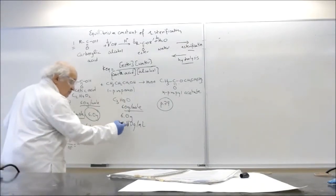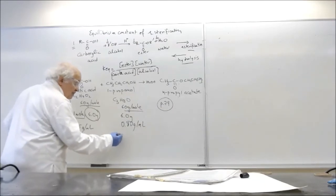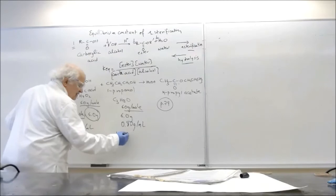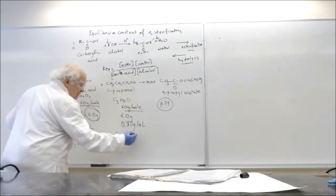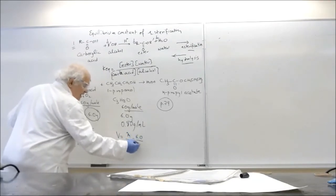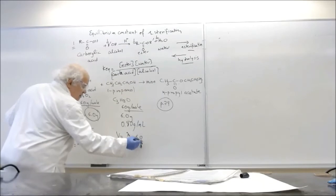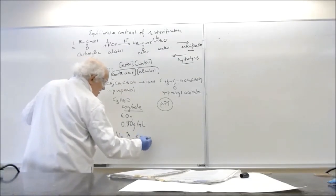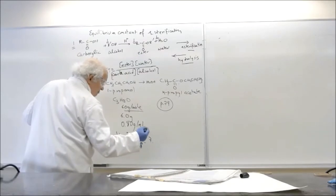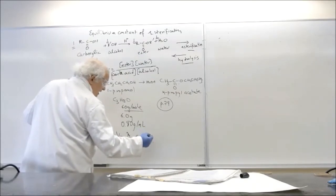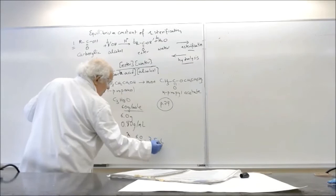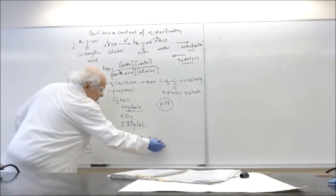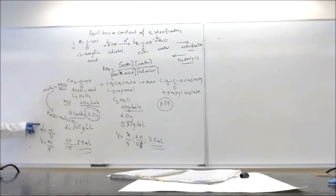So in case of propanol here, again, the density is 0.8, which means the volume in this case will have to be the mass over the density. And this is 6.0 over 0.8, which is roughly 7.5 milliliters. So you notice now that the volumes are different. And the reason for that is because the densities are different.